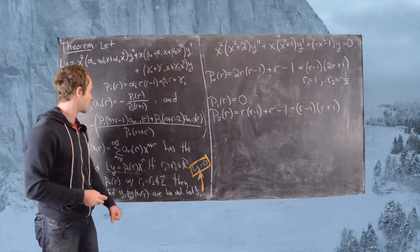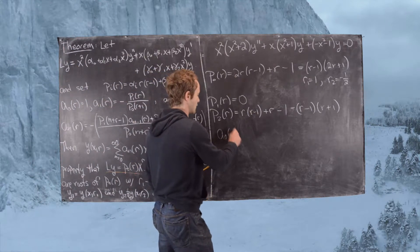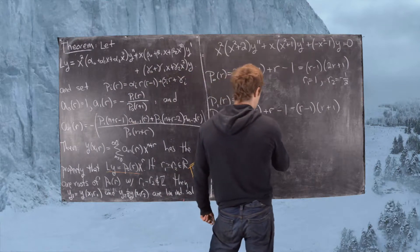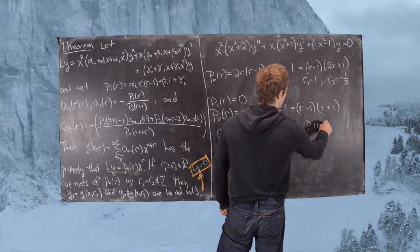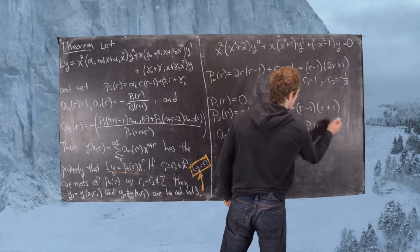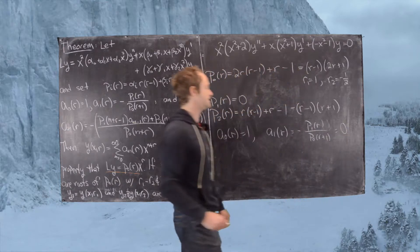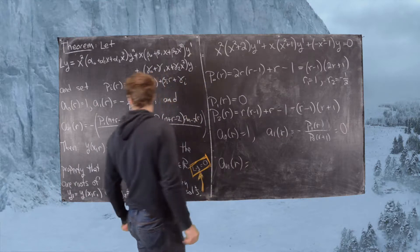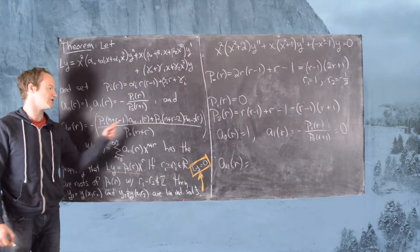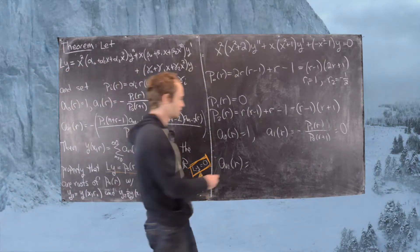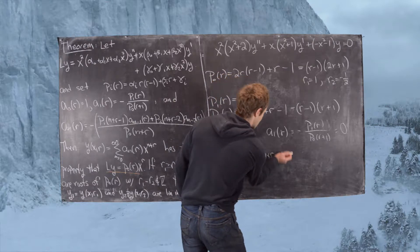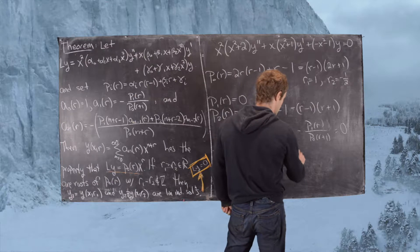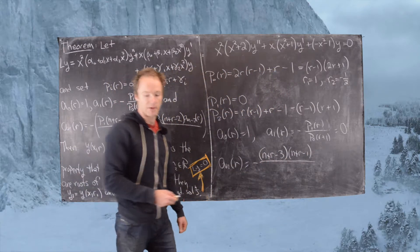Now we plug everything into the recursion. For general R we set a0(R) = 1, since we have a homogeneous differential equation and this is our free variable. Then a1(R) equals negative P1(R+1) divided by P0(R+1), but since P1 is zero, the a1 coefficient is always zero. For general n, since P1 is zero that term cancels, and we get a_n depending on a_{n−2} with numerator involving (n + R − 3) and denominator involving (n + R − 1)(2n + 2R + 1).